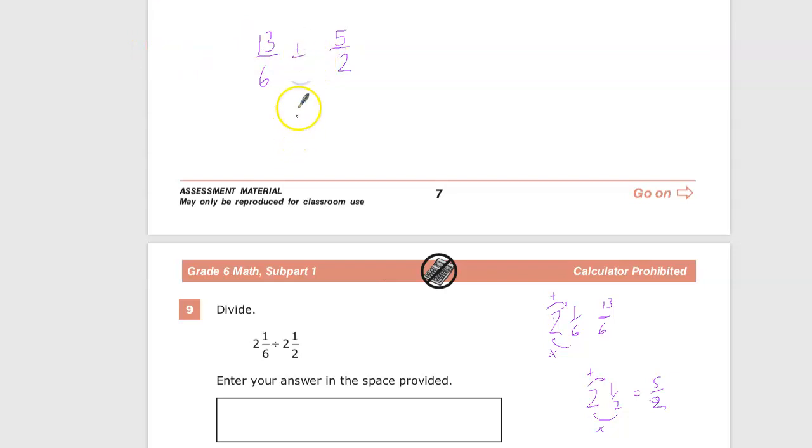And that's currently a division question. So we're going to use keep it, flip it, switch it. Keep the first one, flip the second one, switch it to multiply. So 13 times 2 is 26, 6 times 5 is 30.